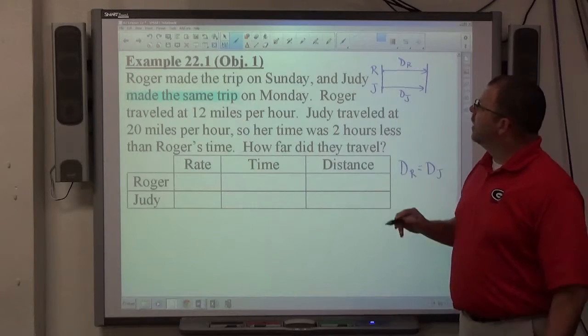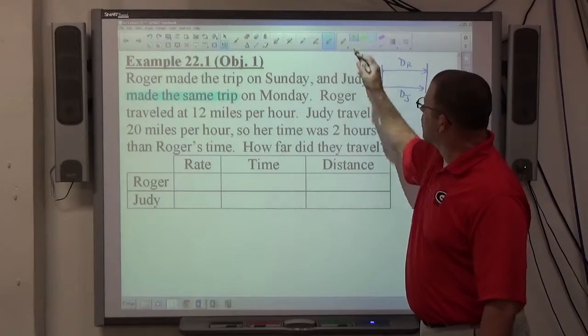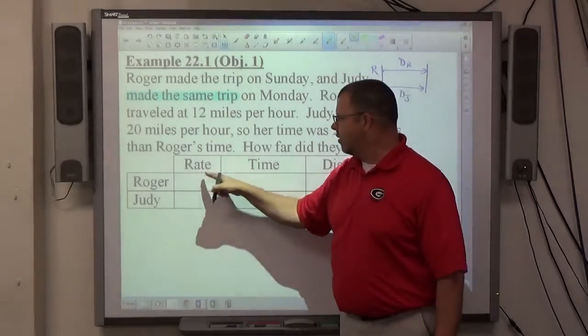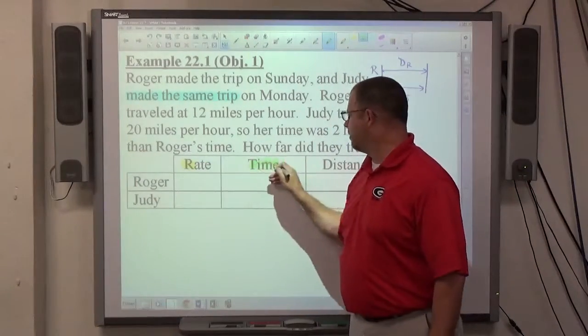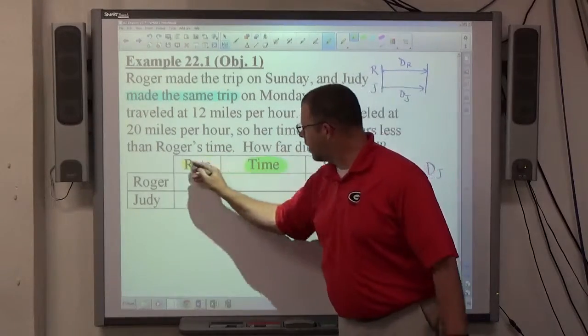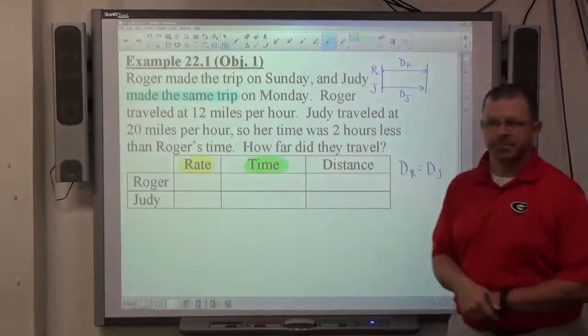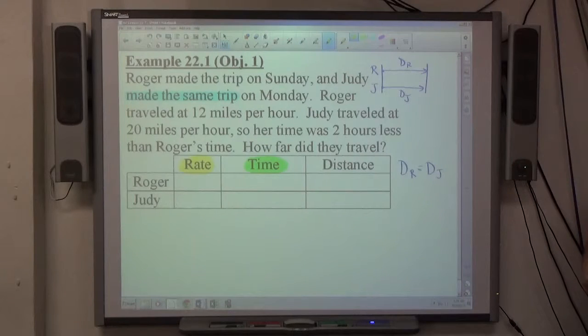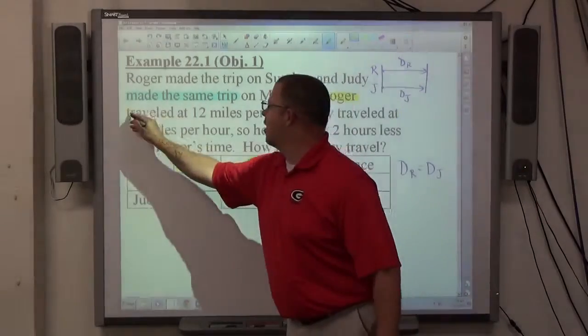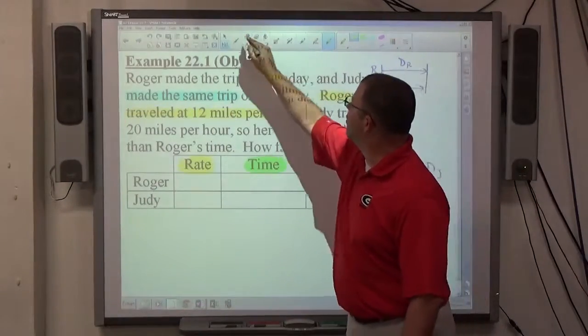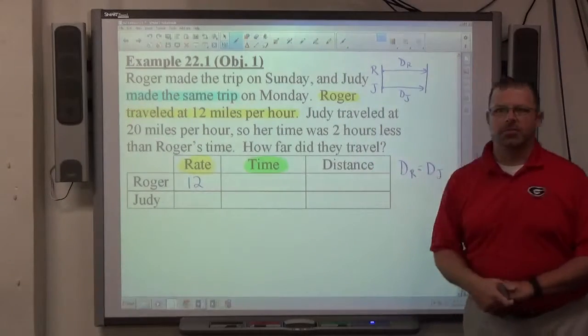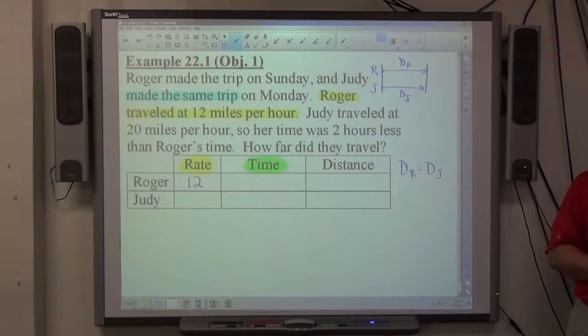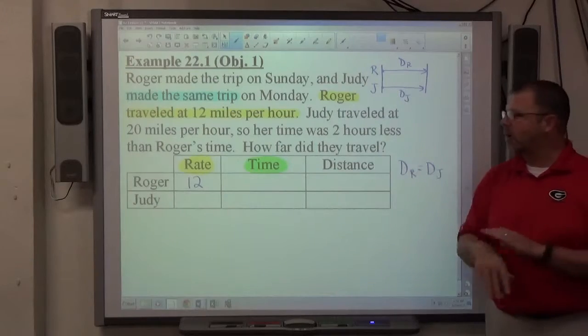Next thing we've got to do is I need to inspect this word problem for anything involving rate or time. So do I know anything about Roger's speed? Yes. 12 miles. Roger traveled at 12 miles per hour. It tells us very specifically how fast he's going. I don't know why he's driving so slowly. Maybe he's on a bike. Maybe he's on a horse. Maybe he's on a tractor. But Roger's going 12 miles an hour.